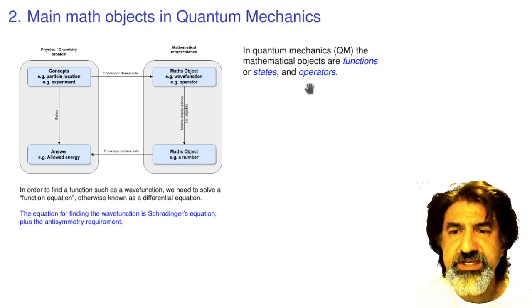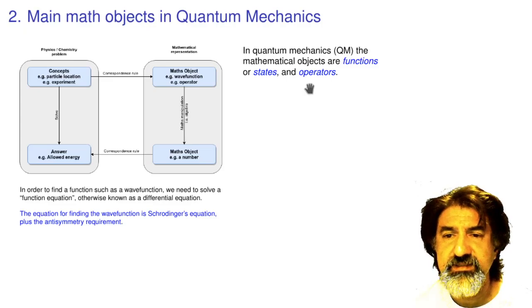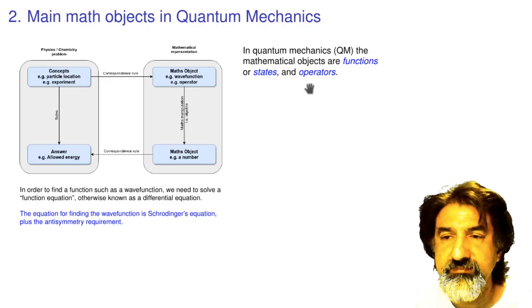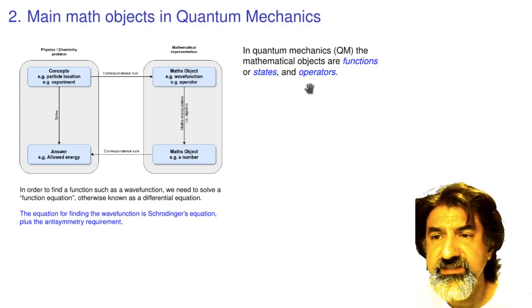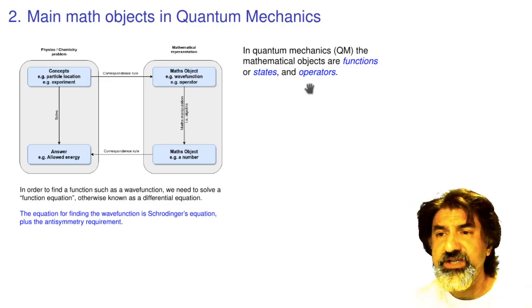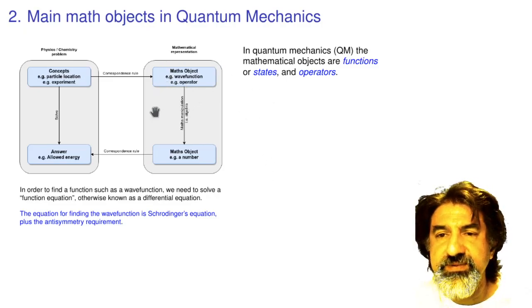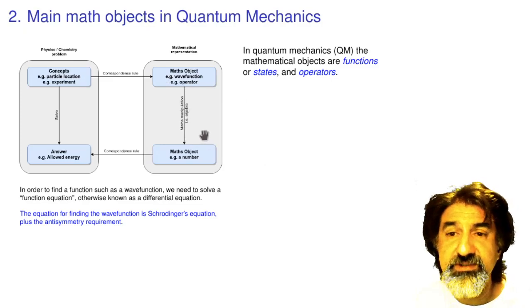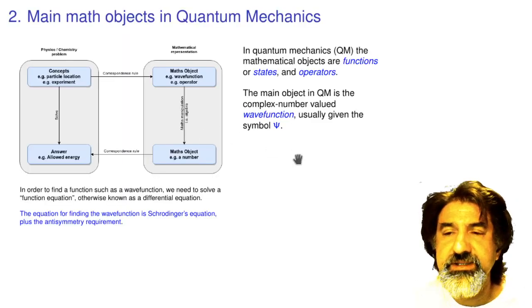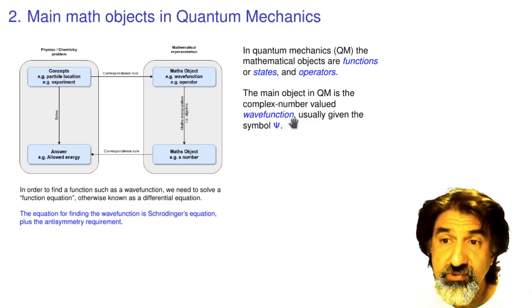Operators are things which change one function to another. A function like f(x) = x² is a one-dimensional function — a parabola. The objects in quantum mechanics are at least three or four dimensional and quite complicated functions or states. The rules or laws that apply to these functions is the Schrödinger equation. The main object in quantum mechanics is called the wave function — a function of all the coordinates of all the particles in the system.